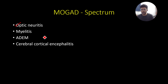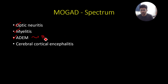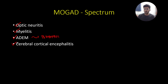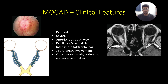Now coming to the spectrum of involvement: MOGAD can present with optic neuritis, transverse myelitis, or as ADEM — acute disseminated encephalomyelitis — which is usually seen in the pediatric population. Another entity is known as cerebral cortical encephalitis.